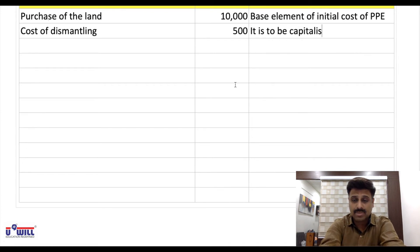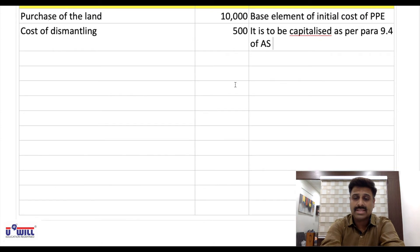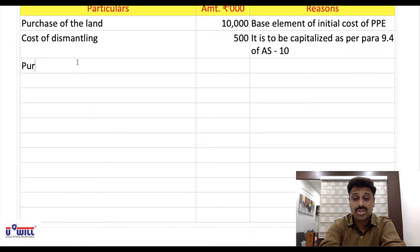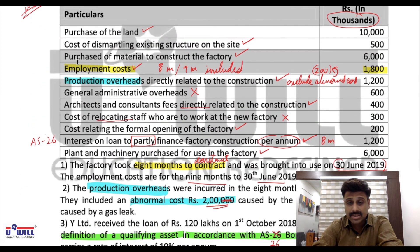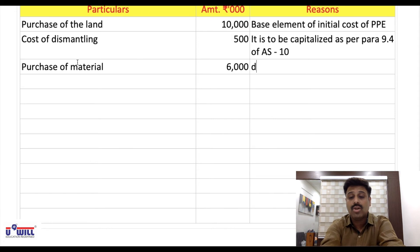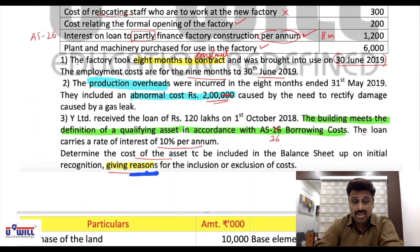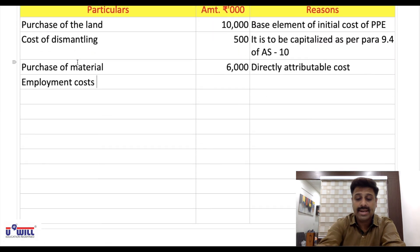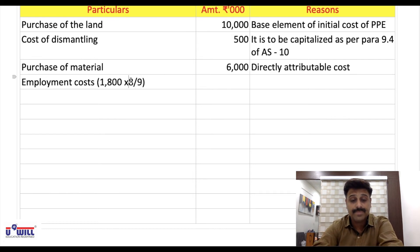Purchase of material to construct the factory: amount 6,000 — included. Reason: directly attributable cost. Employment costs — per adjustment, only 8 months out of 9 months can be included: 1,800 × 8/9 = 1,600. Reason: directly attributable cost; the idle month's cost cannot be capitalized.